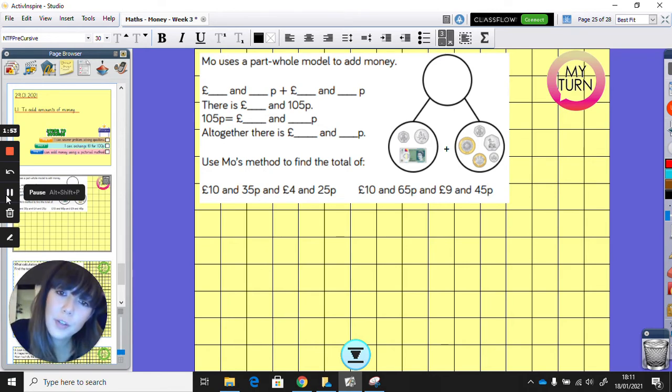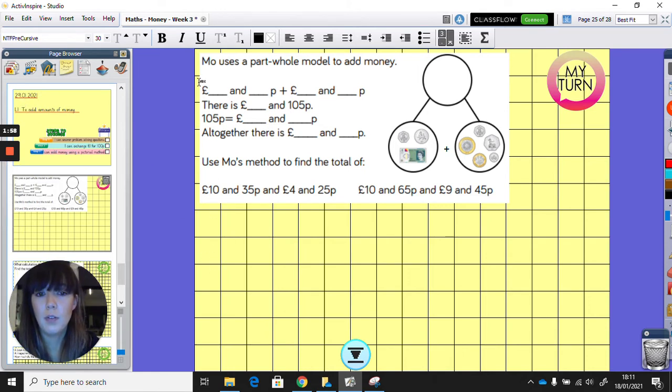And then you need to use Mo's method to find the total of £10.35p and £4.25p. So what we're going to do is we are going to add up, first of all, each part. And then we're going to show it a slightly different way. So it's a little bit confusing, but I will talk you through it.